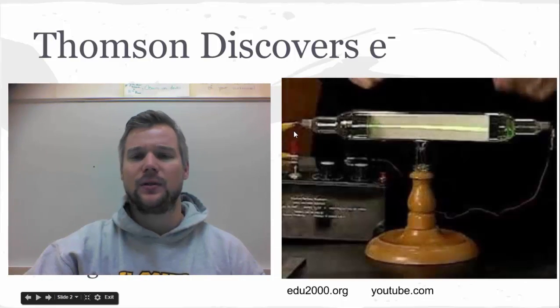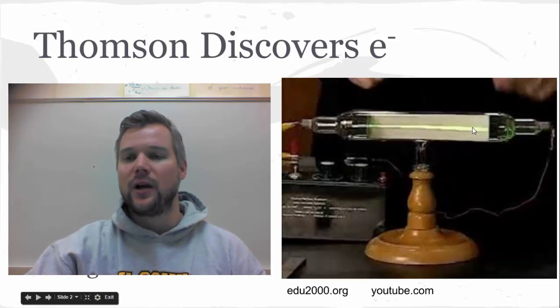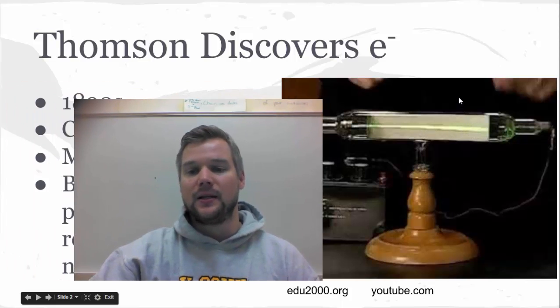So a cathode ray tube looks something like this. It's got a cathode and an anode, and it's going to send the electrons going from one side of the tube to the other, and on the back side is this fluorescent screen that lights up when this beam strikes it, and he was able to watch what happens to this beam when he puts a magnet next to it.